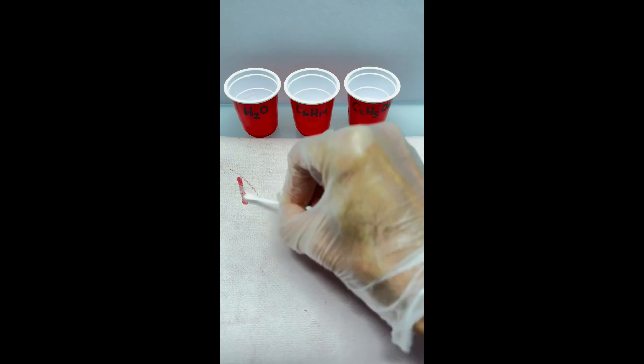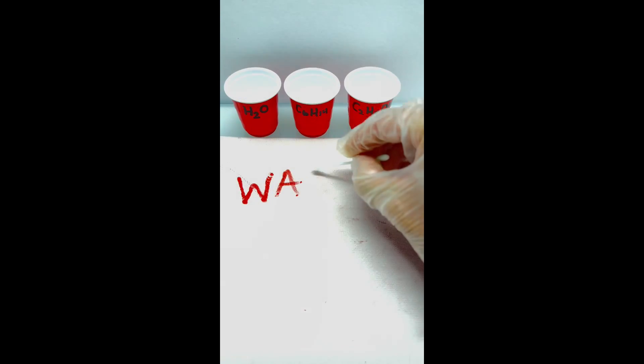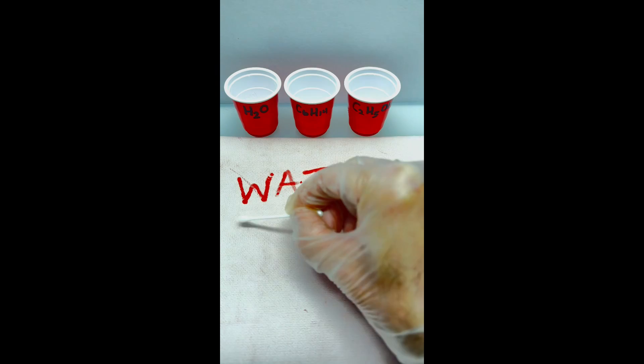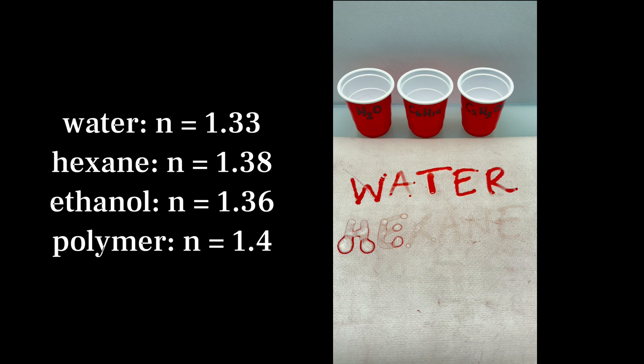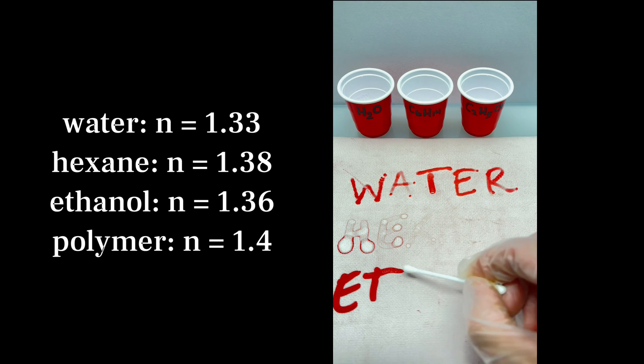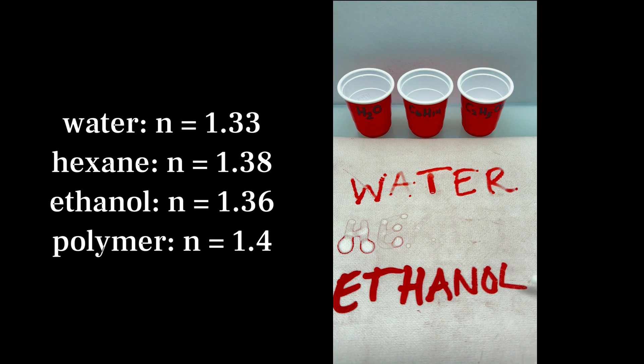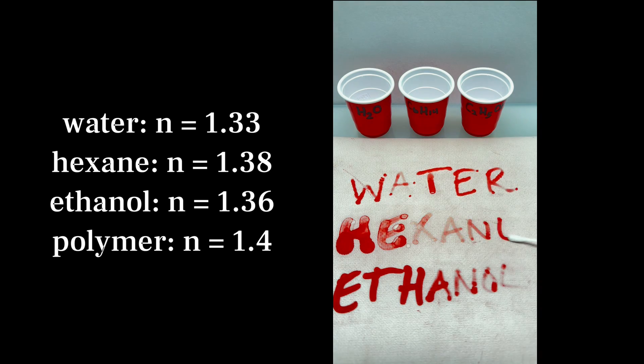Also consistent with this idea was the fact that almost every liquid I tested caused the bath mat to change color to red. This makes sense because the refractive index of each liquid I tested was close enough to that of the polymer. So as the liquid soaked into the pores of the polymer, the coating became transparent, allowing the red color to show through.